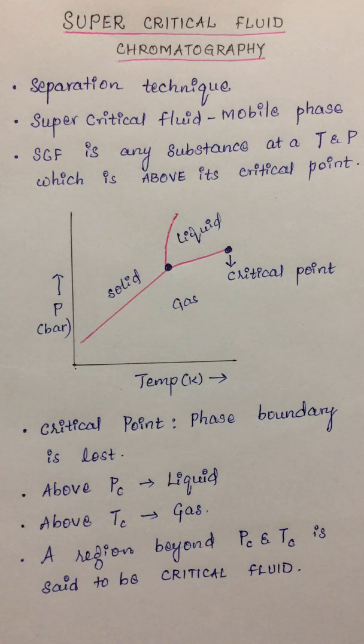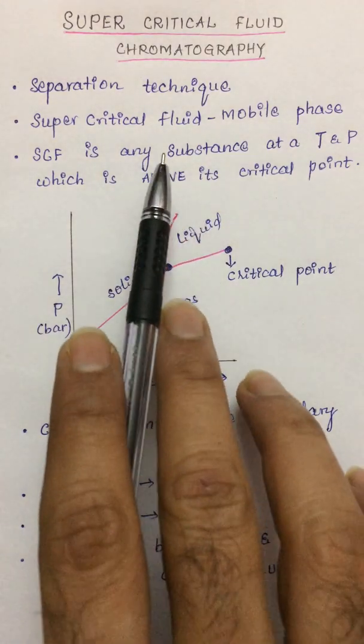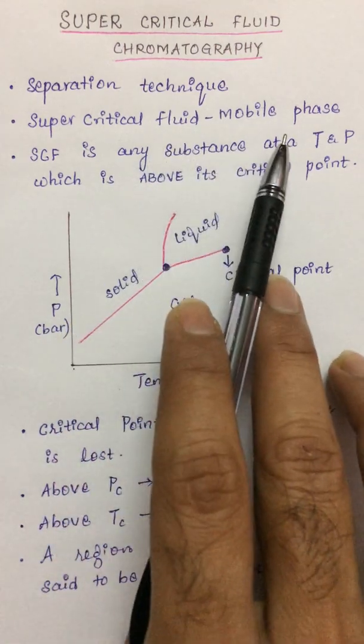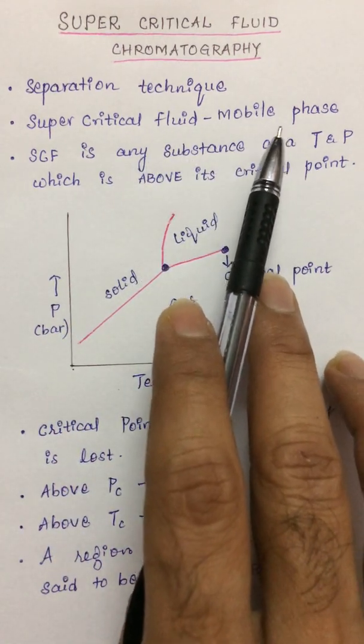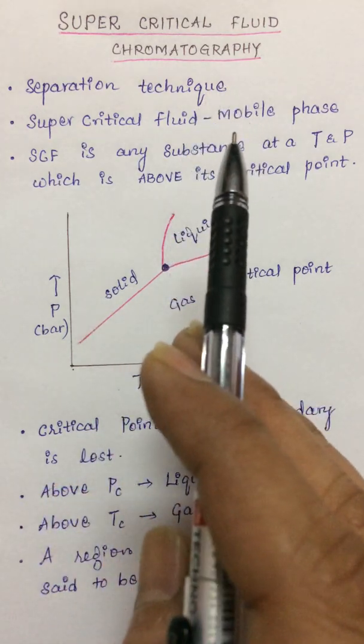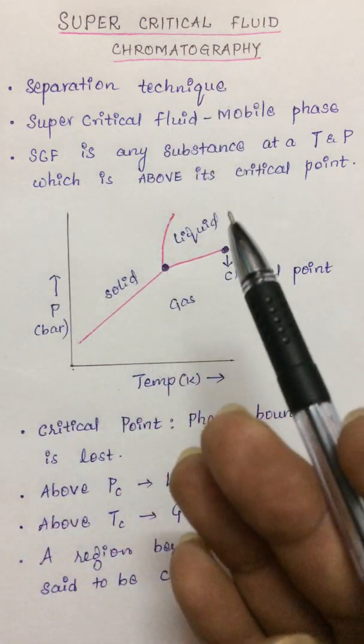Instead it is a supercritical fluid. So a fluid is something that flows. What exactly is a supercritical fluid? Let's see. In this technique we take the supercritical fluid as a mobile phase, and supercritical fluid is any substance at a temperature and pressure which is above its critical point.